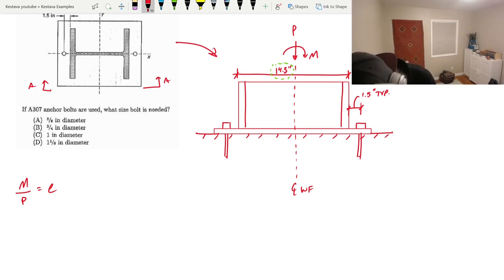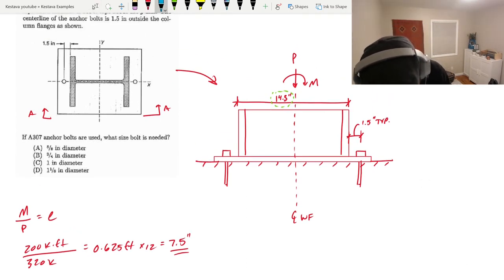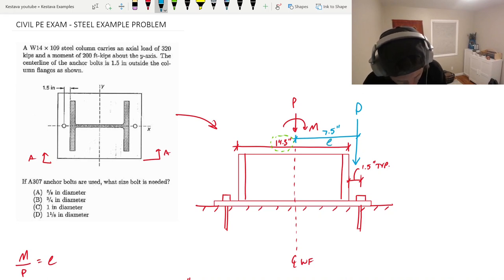M over P equals your eccentricity. We have M, which is 200 kip feet. P is 320 kips. That gets us 0.625 feet. If we multiply that to get it into inches, that's 7.5 inches. So what does that mean? We can combine the axial load and the moment cranking on this column and re-represent that. 7.5 inches means it's hanging out somewhere in this location, not quite to that outside anchor pole and not inside the column. This is now our new P location, which represents both the axial load and the moment.